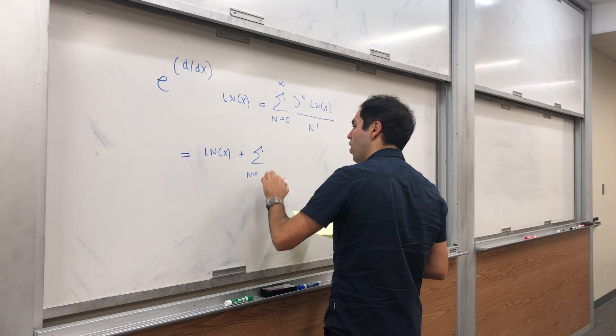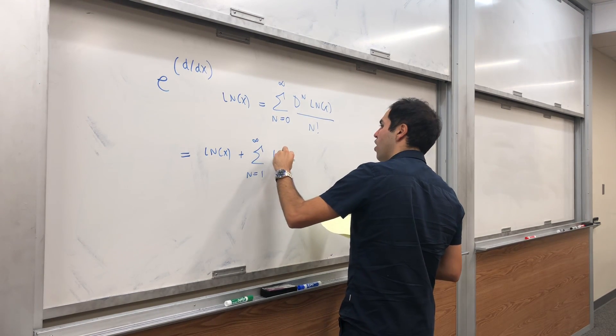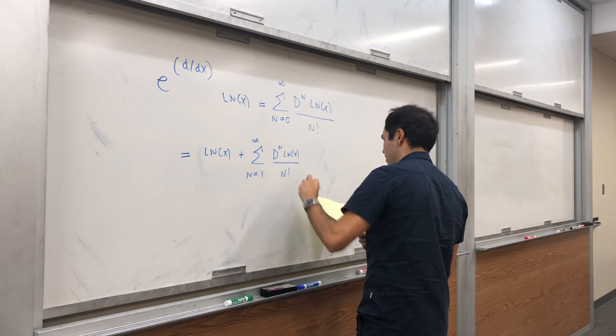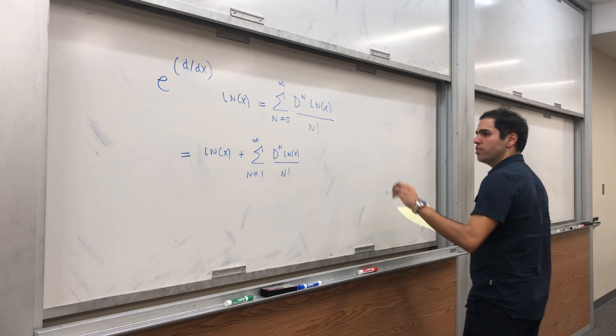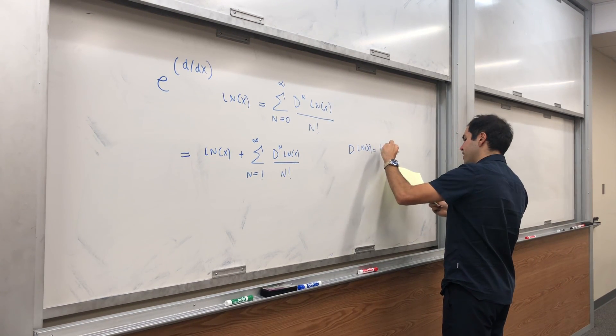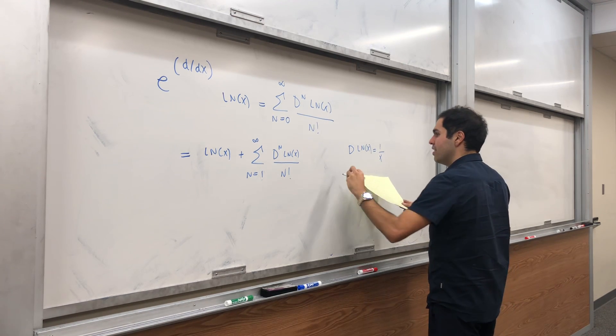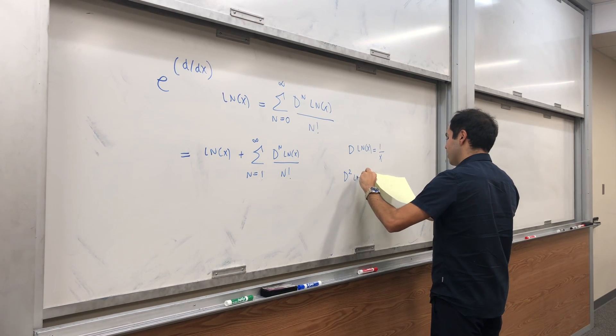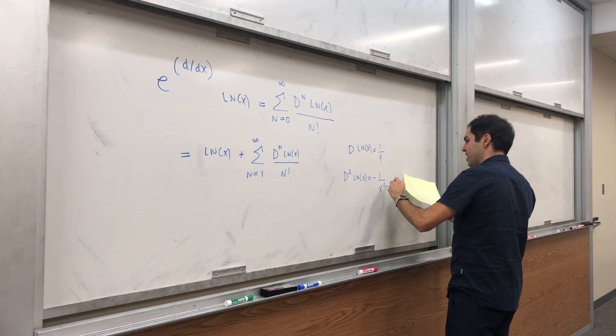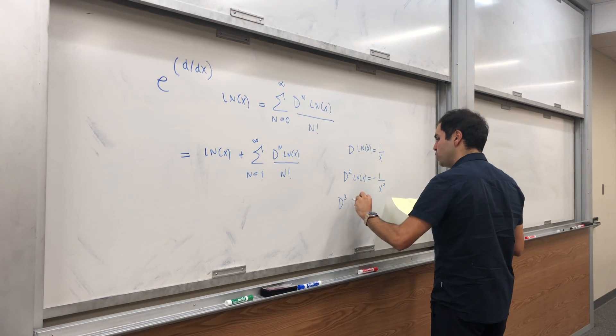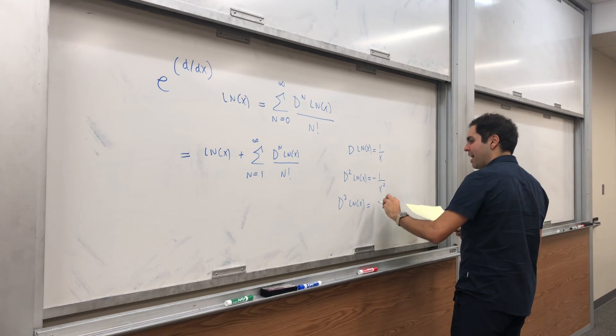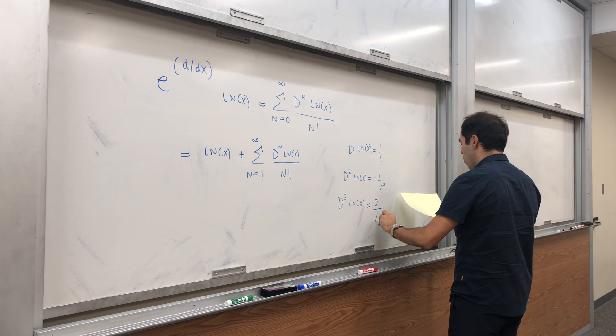So sum from 1 to infinity of d^n ln(x) over n factorial. Now, let's try to see a pattern. So d ln(x) is 1 over x. D squared ln(x) is minus 1 over x squared. D cubed ln(x) is minus minus 2, so 2 over x cubed.